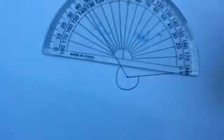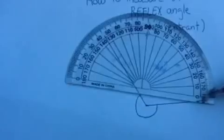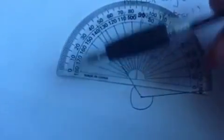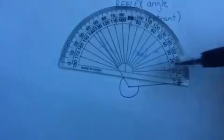Some protractors have 360 degrees, which is a full circle. But here we use a protractor that has 180 degrees, that's half of a circle.